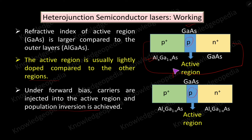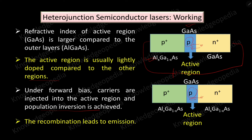When forward biased, electrons are injected into the active region. Since this is a P-type material, the large number of injected electrons leads to population inversion. Recombination of electrons with holes leads to light emission. Initially the emissions are spontaneous, but as the forward current increases beyond a particular threshold value, stimulated emission starts — that is the working principle of a semiconductor laser.